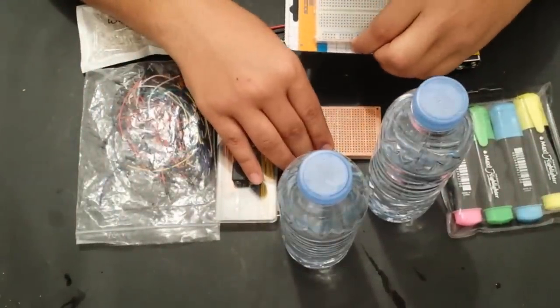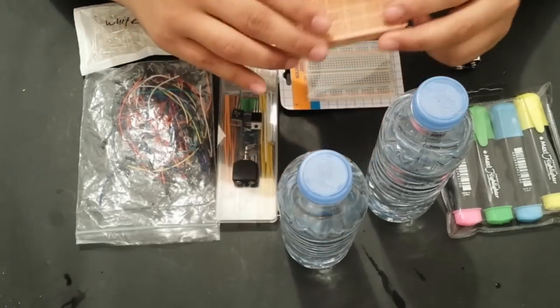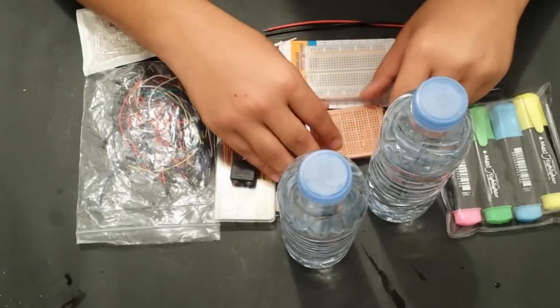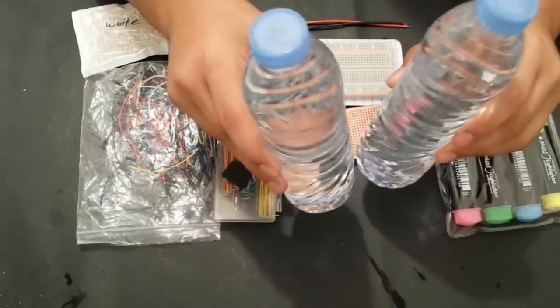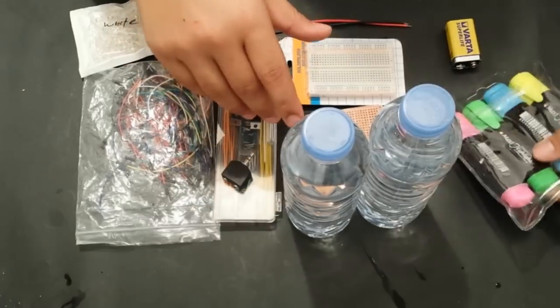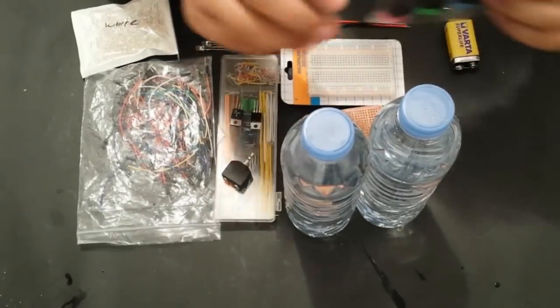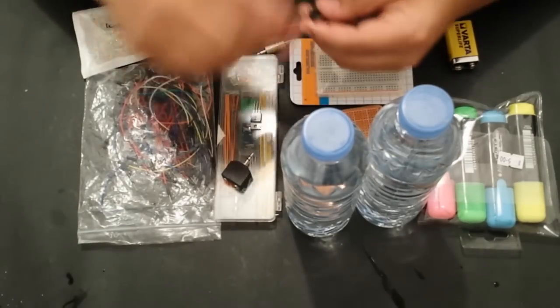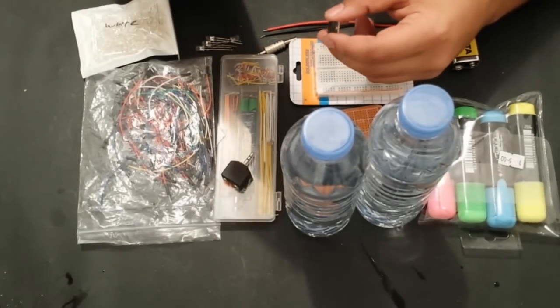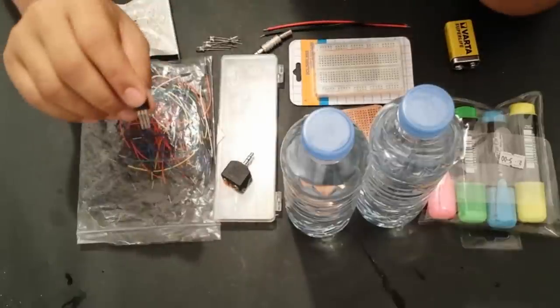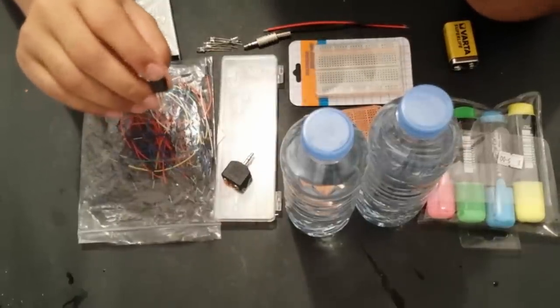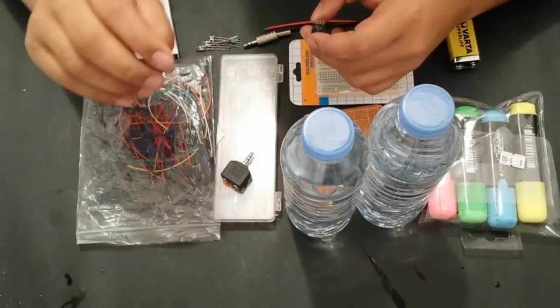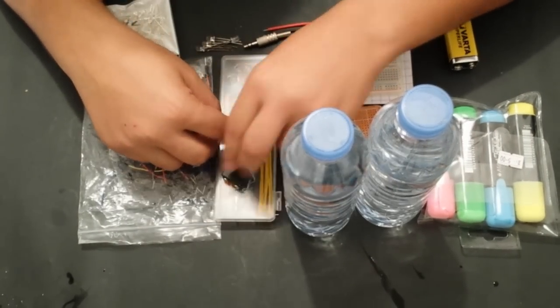The parts needed for this build are a breadboard, or if you're planning on making this project permanent like I am, we will be using this PCB board. We will need two bottles of water, or three or four, however many you want. You will need some highlighters to color the water. We will need a TIP31C transistor, or as I am using, the D235 transistor. I have experimented with many different types of transistors and I found that the D235 gives out the best results.